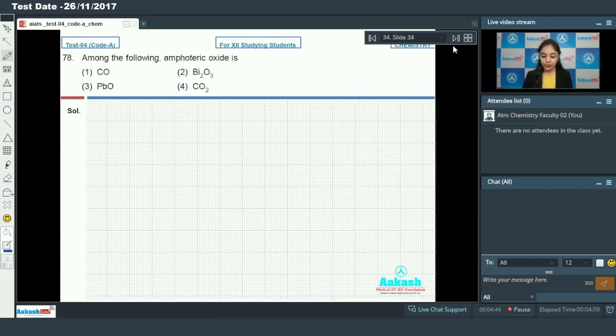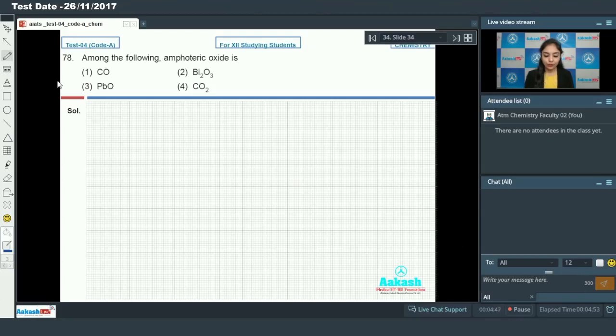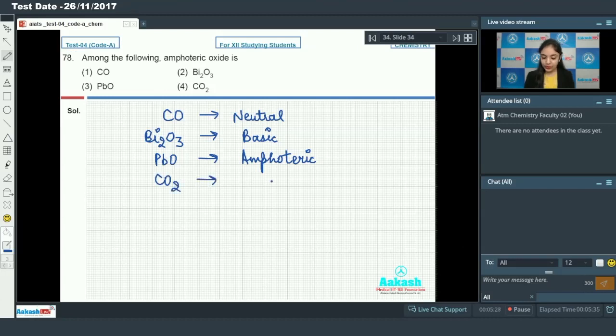Moving on to the next one. We have question number 78 in which we have to find out the amphoteric oxide. If I see carbon monoxide which is a neutral oxide, we have the oxide of bismuth which is a basic oxide. Next we have lead oxide which is an amphoteric oxide, and the last we have CO2 which is an acidic oxide. So the only amphoteric oxide is option number 3.